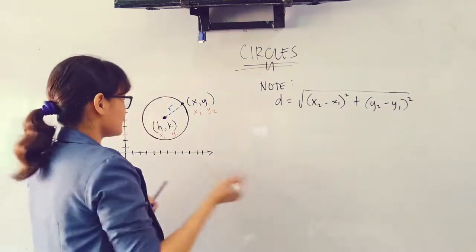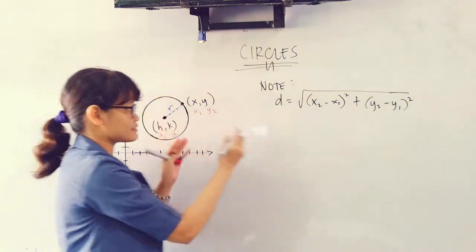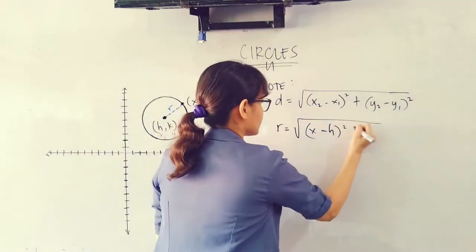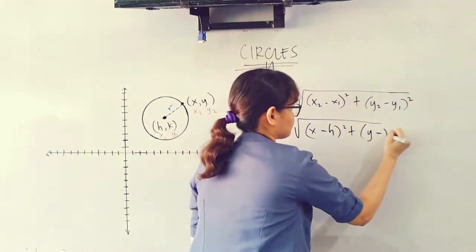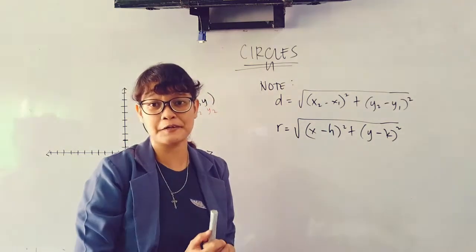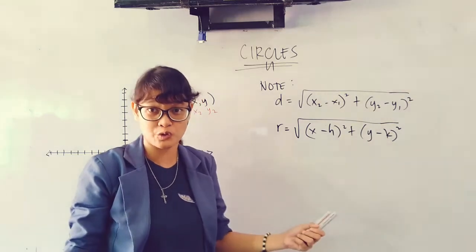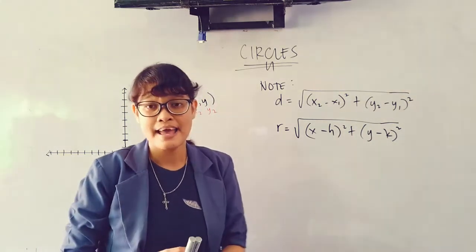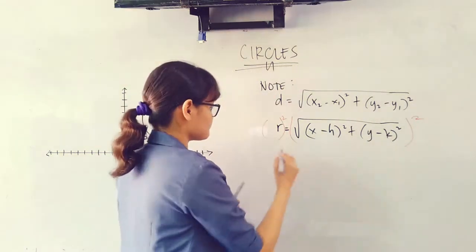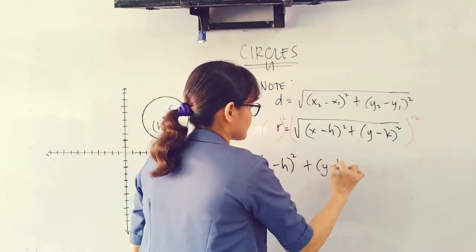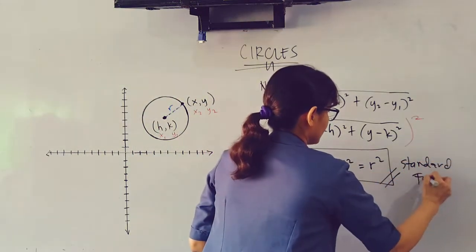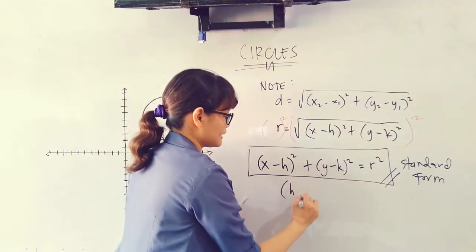Now, if we are going to substitute the values, let's say your (h,k) is x₁ and y₁, and then your (x,y) will serve as our x₂ and y₂, and then you have r. This r right here, which is the radius, is the fixed distance of this arbitrary point from the center. So if we are going to substitute this here, we will be able to get the standard form of a circle. So replacing d by r, you have r equals √((x-h)² + (y-k)²).